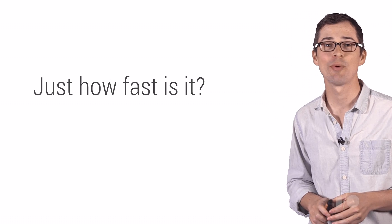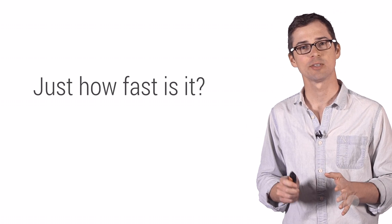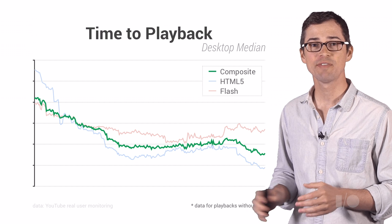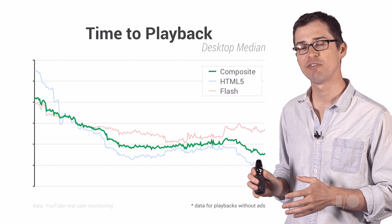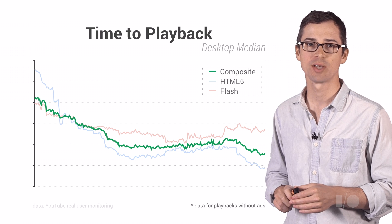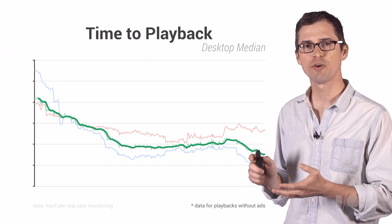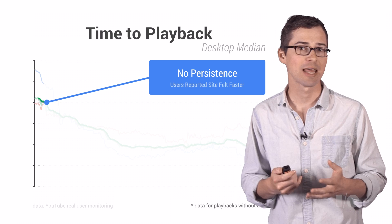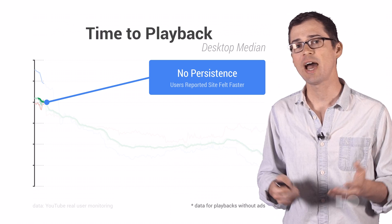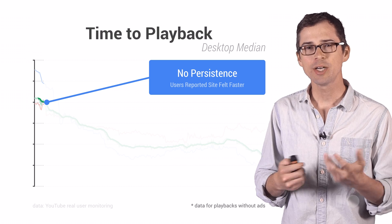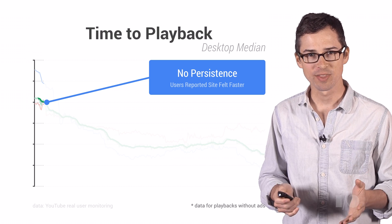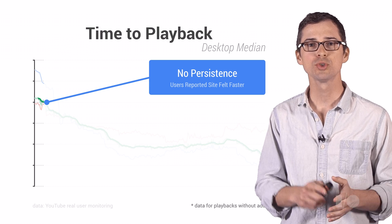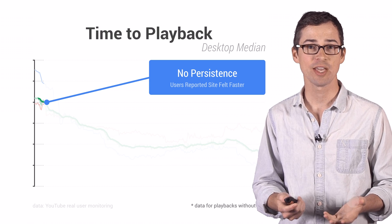Now let's take a brief look at when YouTube launched these features and how they each impacted performance. Here's real data from YouTube's real user monitoring. I've graphed the median time to start playback for both HTML5, Flash, and the traffic-weighted composite of both — but for clarity, we're going to focus on the five-day moving average of the composite. When we first introduced dynamic navigation between consecutive video pages, we didn't have a persistent player yet, and we only saw a minor reduction in overall time to playback. Despite this, users reported that the site felt faster, showing us that there are very real user-perceived performance gains that dynamic navigation brings.